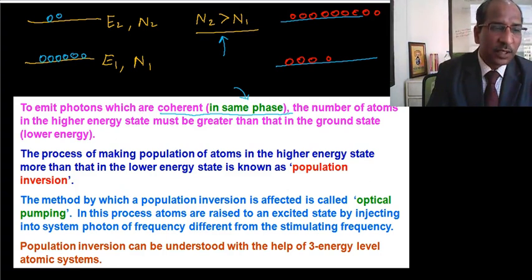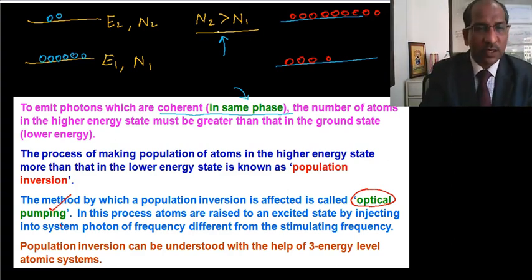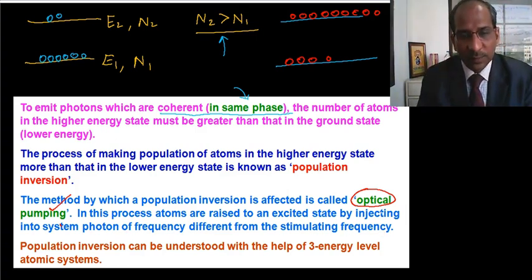Now the second point: the method by which a population inversion is affected is called optical pumping. The pumping is only the process by which we can invert the number of atoms. In this process, atoms are raised to an excited state by injecting photons of frequency different from the stimulating frequency. The frequency, or you can say the energy, of the incident radiation which is helpful to excite the active medium of the laser, that is the point here.